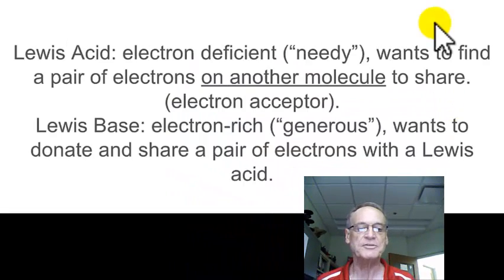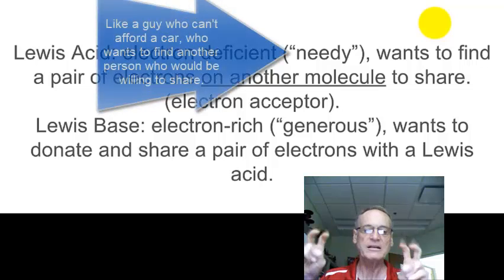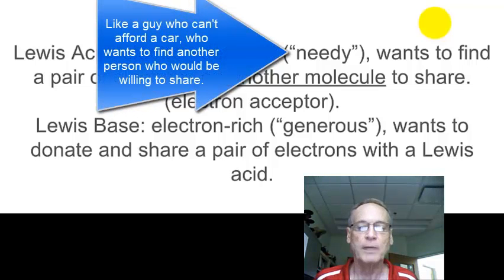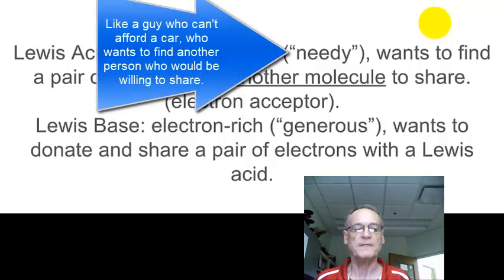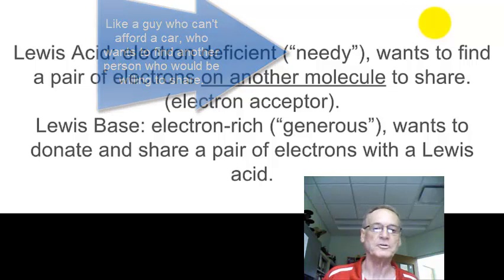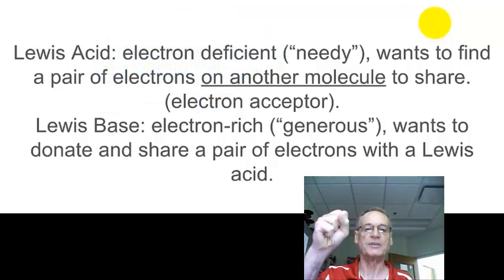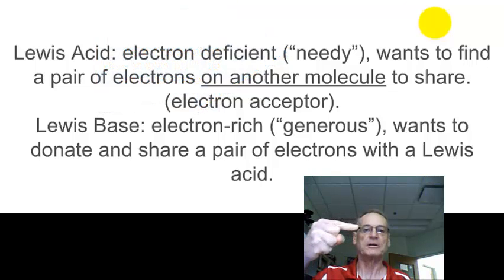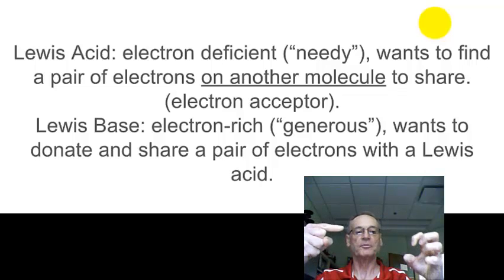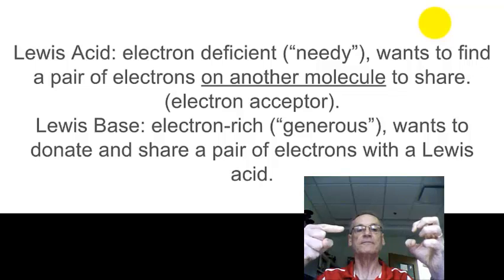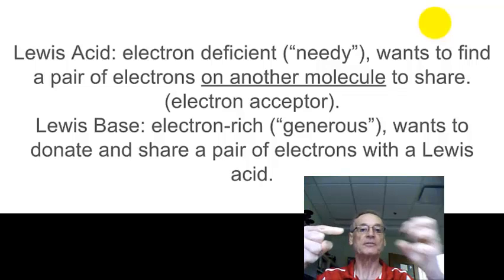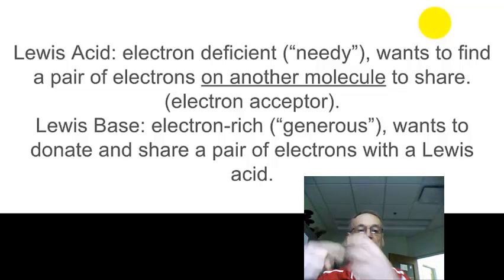So what is a Lewis acid? Well, it's an electron-deficient — what I would call a needy — ion or molecule, or in some cases an individual atom, that wants to find a pair of electrons on another molecule to share. Here's a molecule with a pair of electrons sticking out here like a sore thumb. Here comes a Lewis acid that really wants to find a pair of electrons it can bond to, and bonds to it.